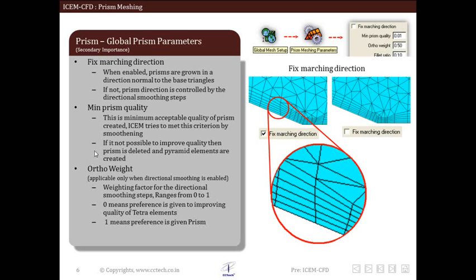Next parameter is ortho weight. This parameter is applicable when direction smoothing is used. It is used to prioritize between quality of prism and that of tetras.